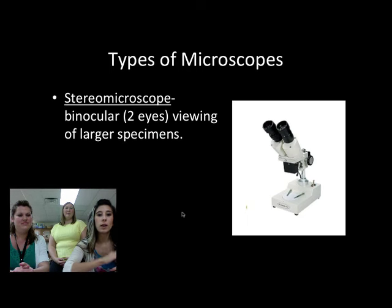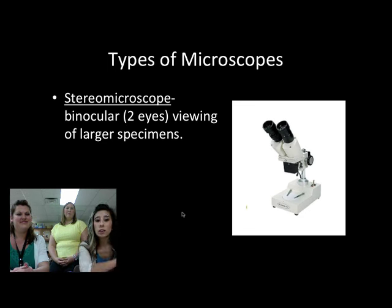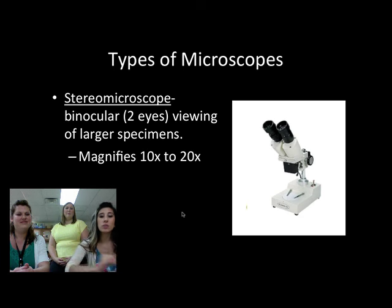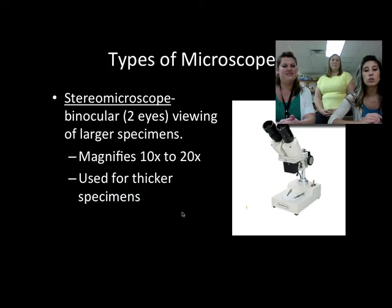To begin with, we've got the stereomicroscope in that picture right there. It is binocular, meaning it has two holes for your eyes to look through, and it's for viewing larger specimens. The magnifications are between 10 and 20 times. We usually use it for something that's thicker, something that's not thin that we can make a wet mount.